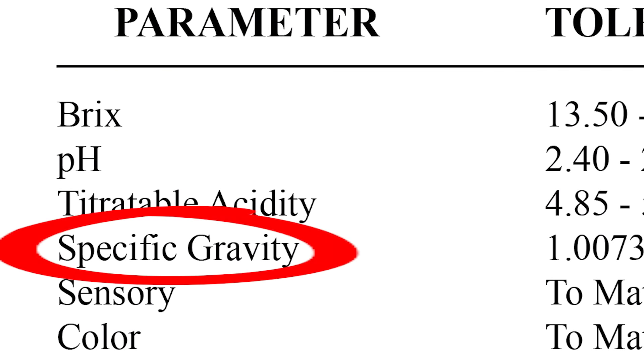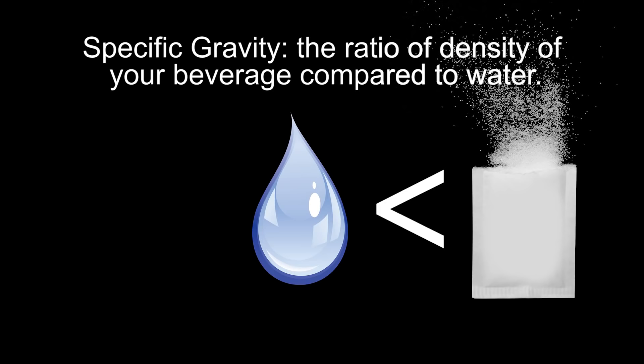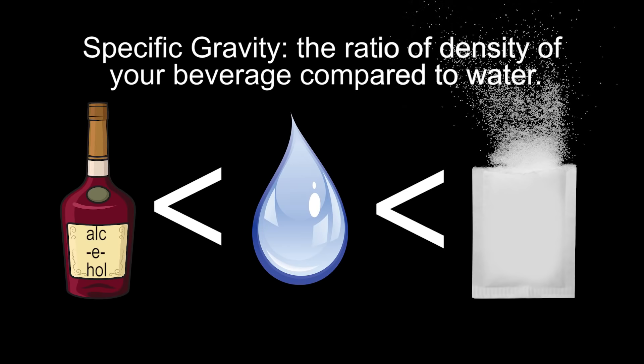Specific gravity is the density of the beverage compared to the density of water. More solids in your beverage, like sugar, will make it denser, whereas alcohol in a beverage makes it less dense.